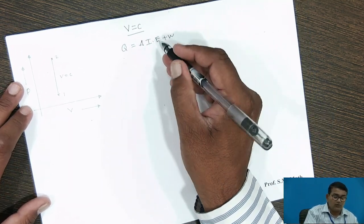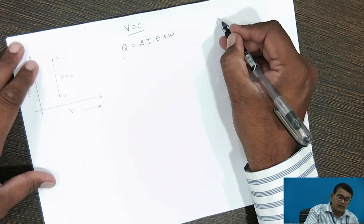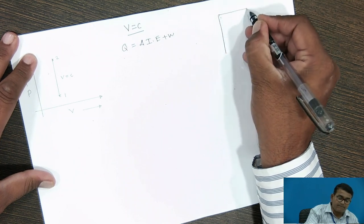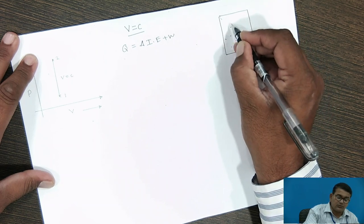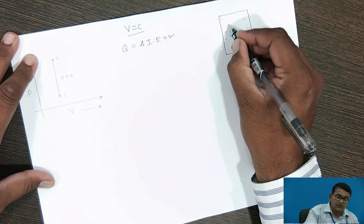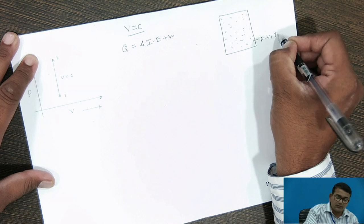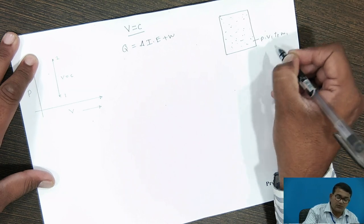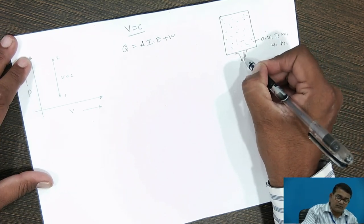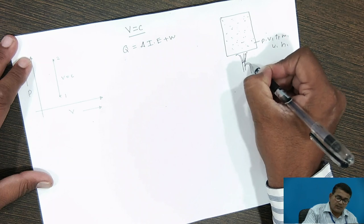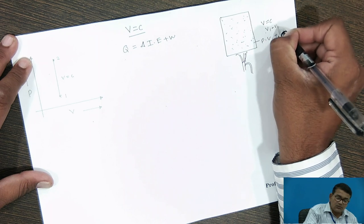When this process is going on and volume remains constant, take a container. In that container, gas is filled — its pressure, volume, and temperature are known. At the initial stage: pressure P1, volume V1, temperature T1, mass M1, internal energy U1, enthalpy H1. Now heat is to be added to this gas at constant volume, that is V1 is equal to V2.